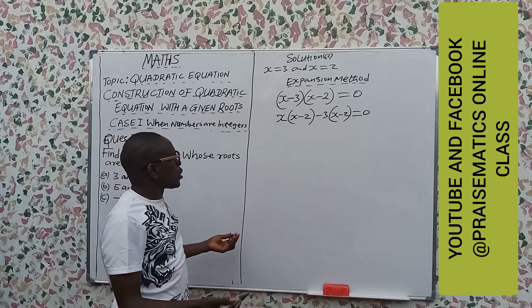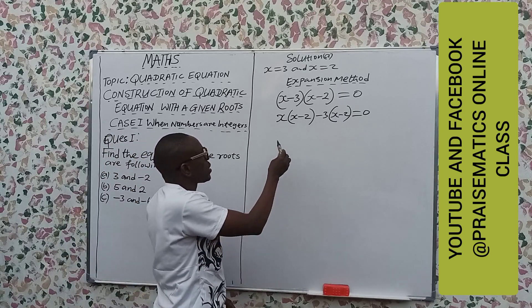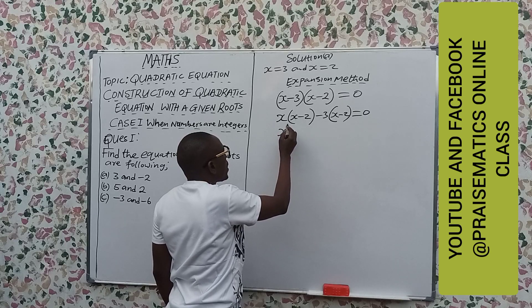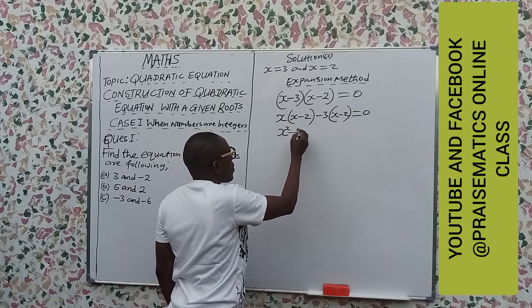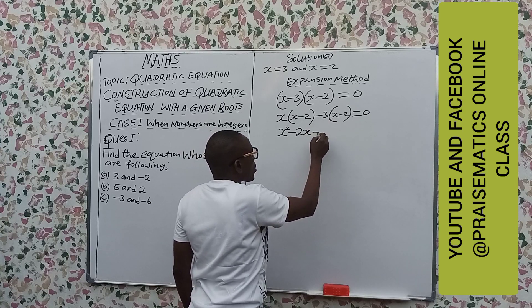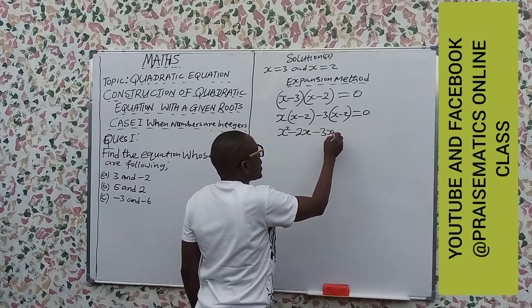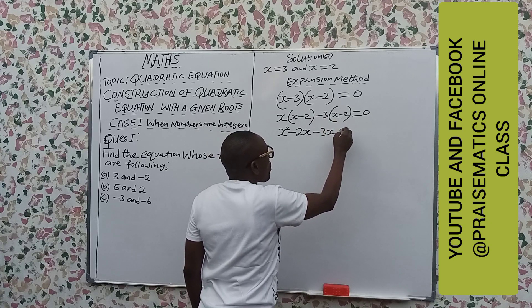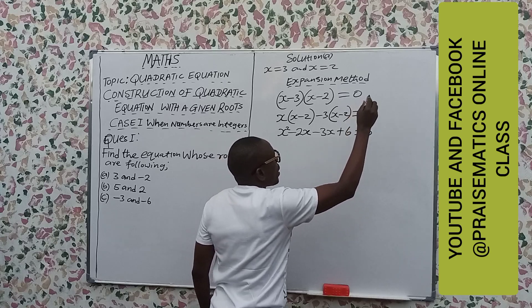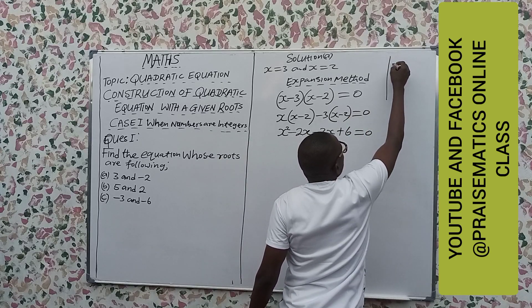What do we do? We multiply. x times x will give us x squared. x times minus 2 will give us minus 2x. Minus 3 times x will give us minus 3x. Minus 3 times minus 2 will give us plus 6 equal to 0.